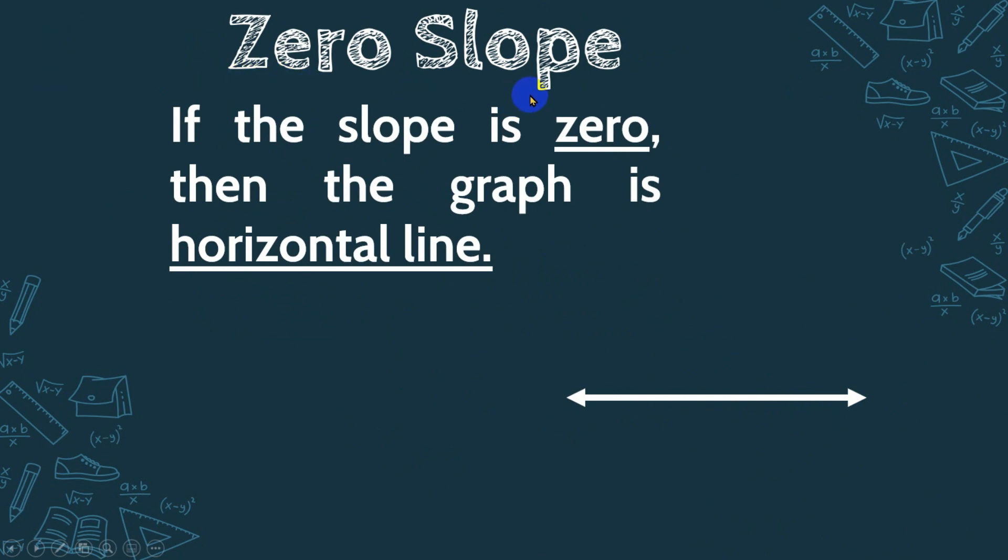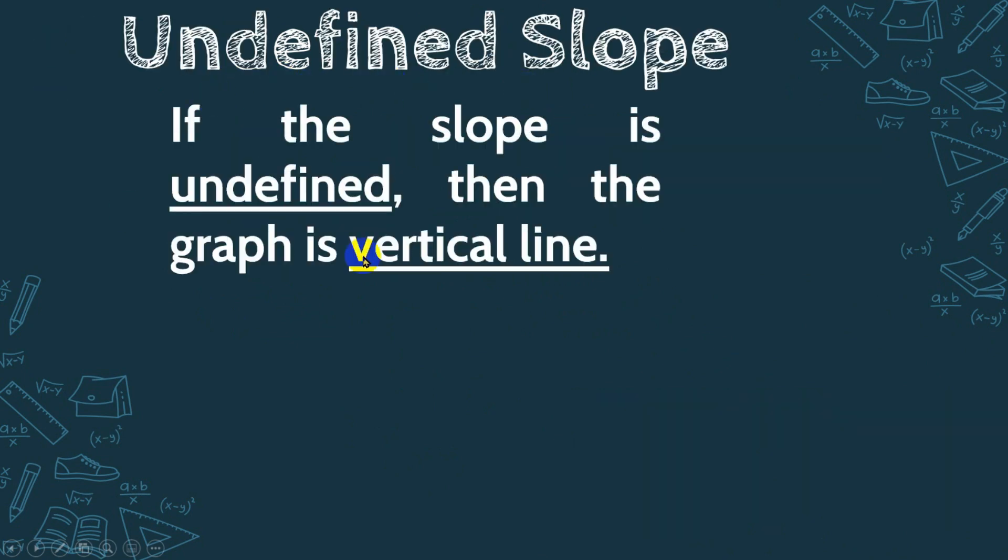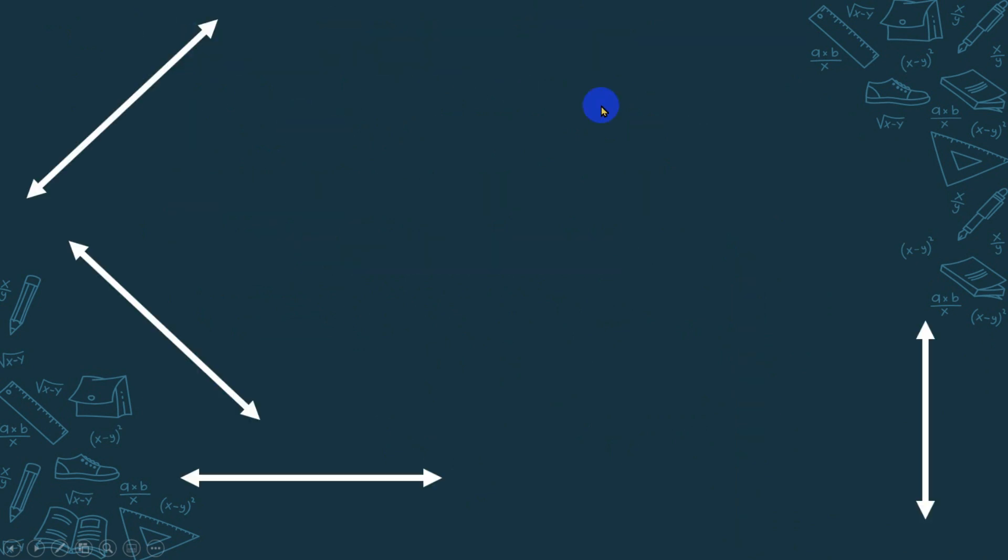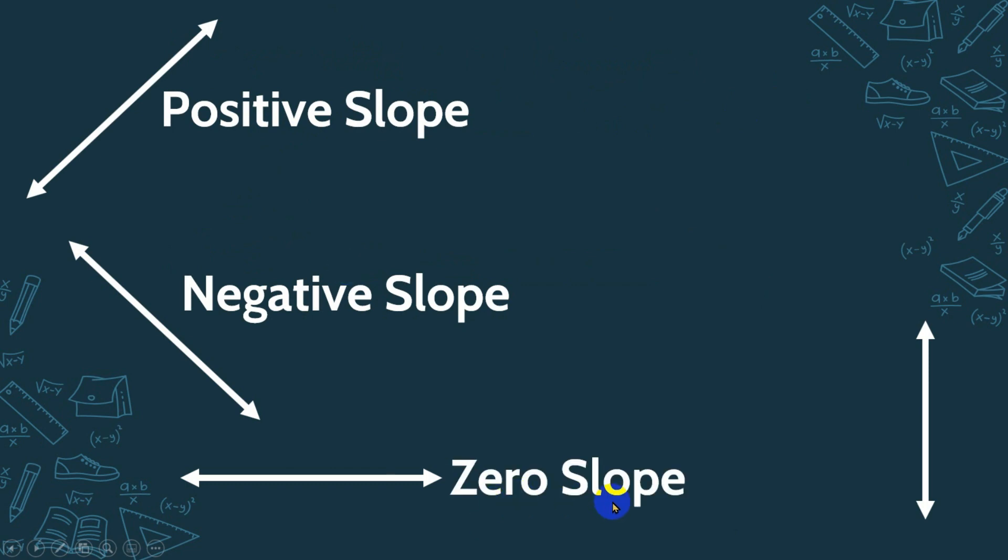The last one is undefined slope when the graph is a vertical line, like the y-axis. Again, we have positive slope, negative slope, zero slope, and undefined slope.